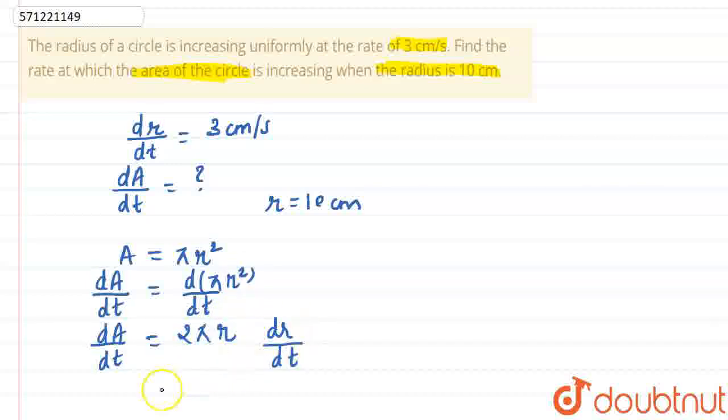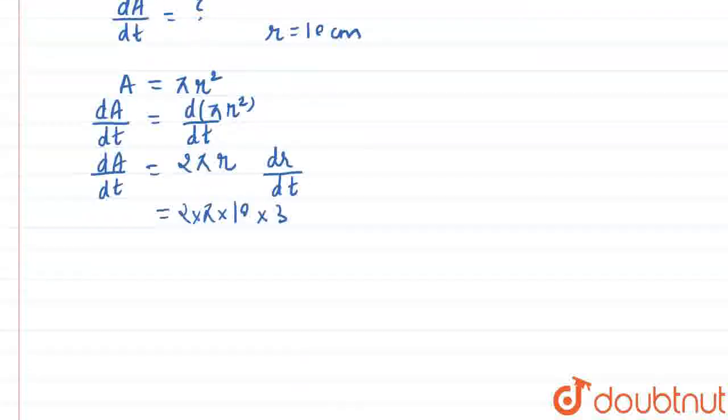And dr by dt is given as 3, into 3 and 2 into π and radius is 10. So, from here what we get is equals to 60π cm² per second.